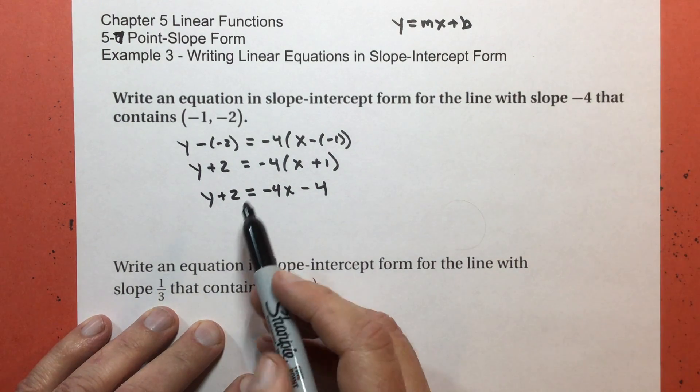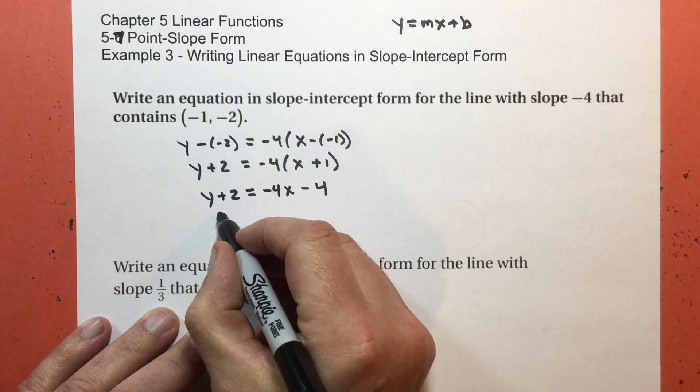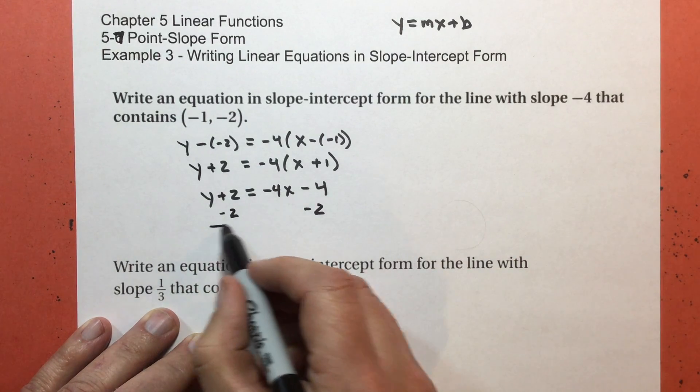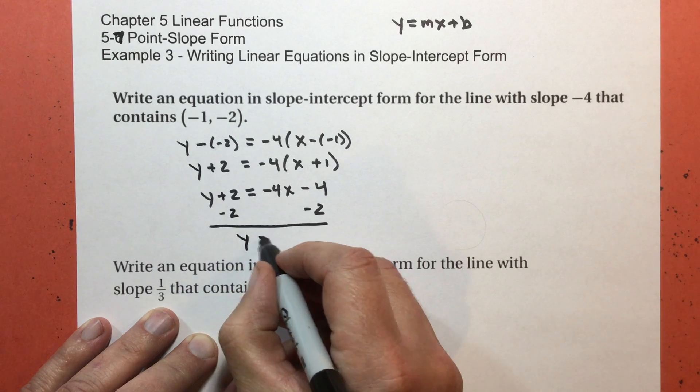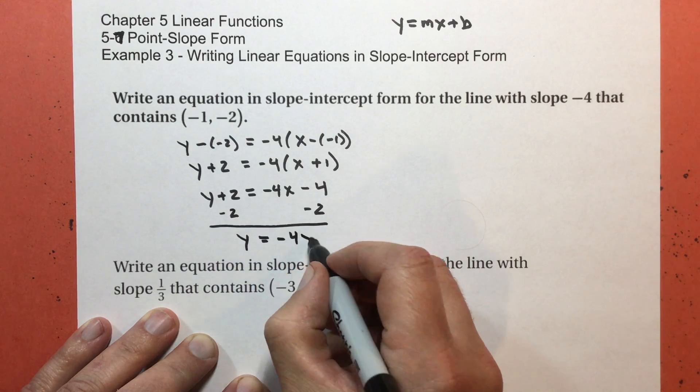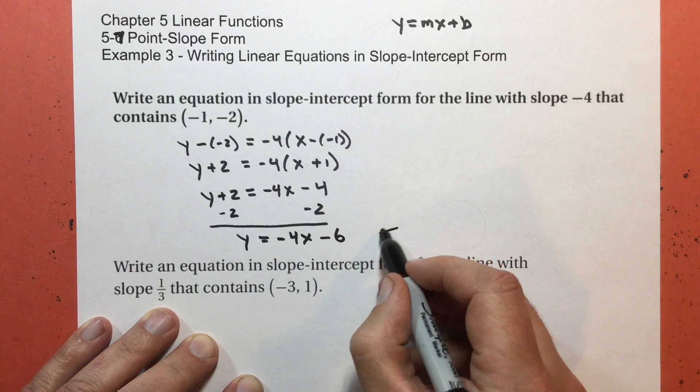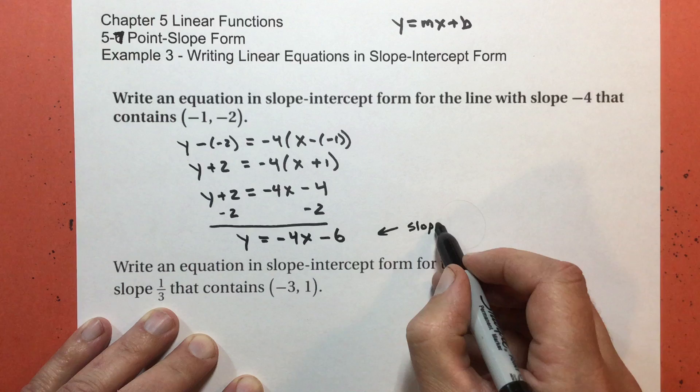Now, I'm going to add negative 2 to both sides here. And I get y equals negative 4x, negative 4 plus negative 2 is negative 6. And this is slope intercept form.